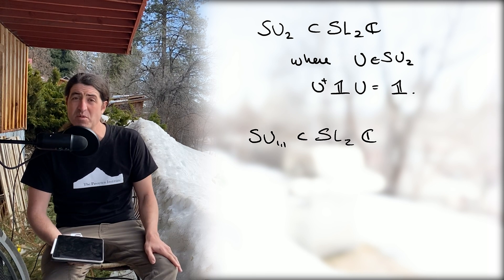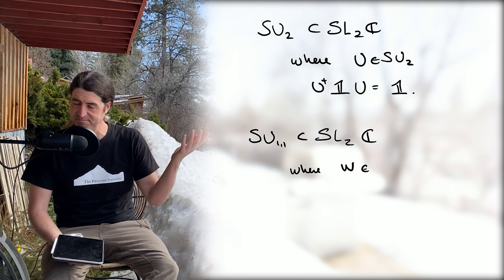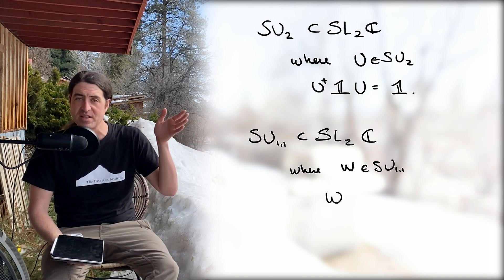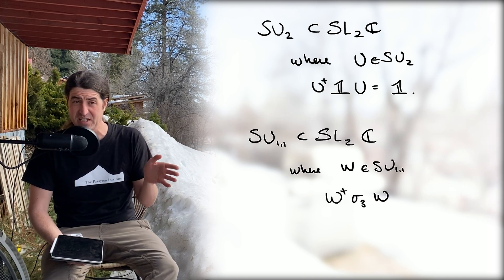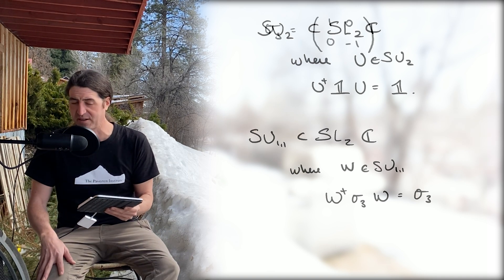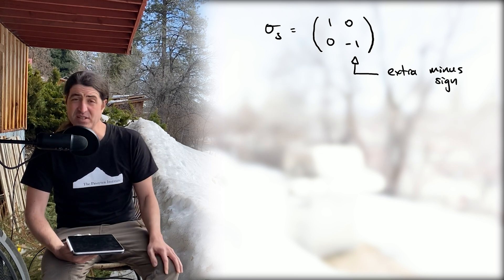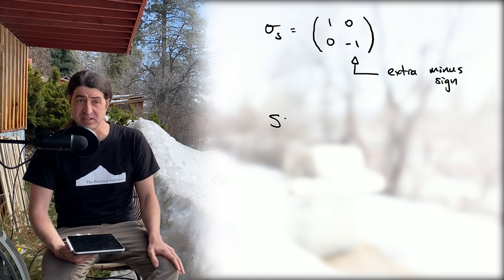Notably among them is SU(1,1), the special unitary group of matrices with a different signature. It holds the matrix sigma 3 fixed, and you can see that signature of that matrix is 1 and minus 1.